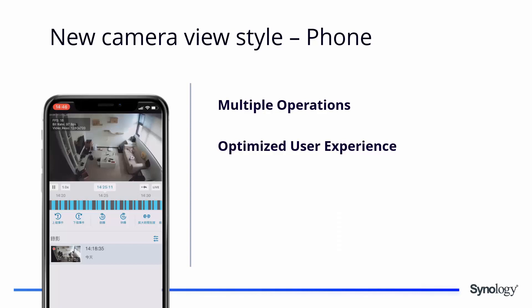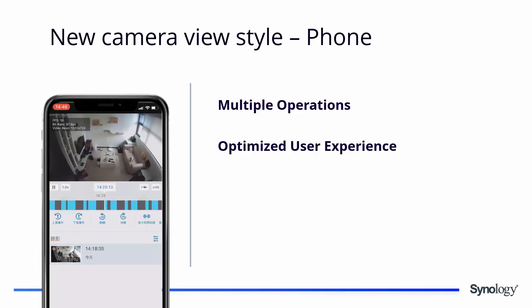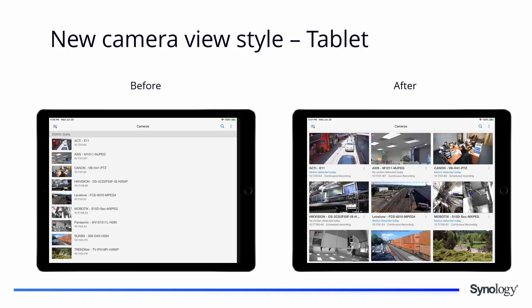The new update also features new operations for a better user experience. Toggles now allow users to rewind or fast forward video by 10 seconds, and to skip to the beginning or backwards. Users can also pinch in and out of the timeline to view events during a predefined recording period — very useful when the recording covers a long period of time. This new viewing style is also available on tablets.